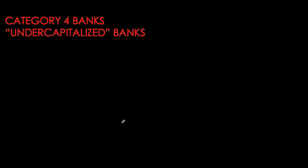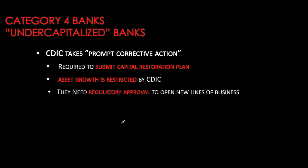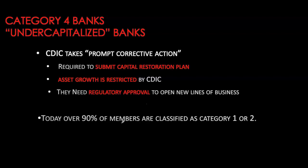As soon as a bank does not have enough cushion of capital, classifying it as category four, we see CDIC stepping in and taking prompt corrective action. Prompt corrective action requires the troubled bank to submit a capital restoration plan. CDIC restricts their asset growth and also requires the bank to seek regulatory approval to open any new branches or develop new lines of business.